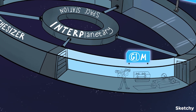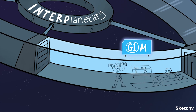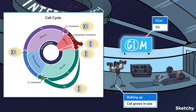Here at the gym is where nerds like myself get swole. G1, the first gap or growth phase, is essentially a gym for cells. G1 is usually the longest stage of the cell cycle. In G1, the cell ramps up protein synthesis while increasing its size and number of organelles to prepare for DNA replication.